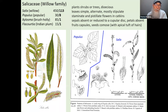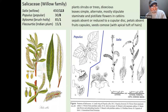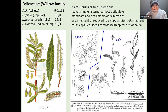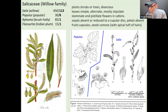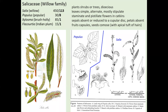In Iowa, we have 12 native species of Salix and three native species of Populus. The three Populus species are Populus grandidentata (big tooth aspen), Populus deltoides (eastern cottonwood), and Populus tremuloides (quaking aspen).